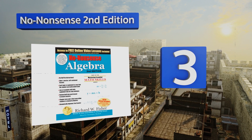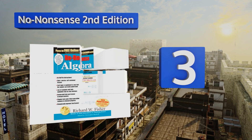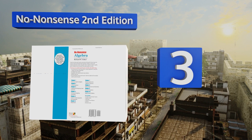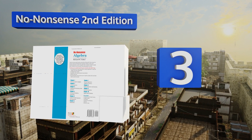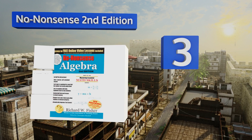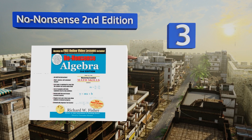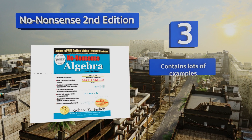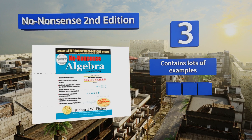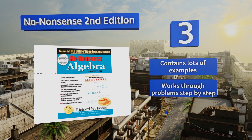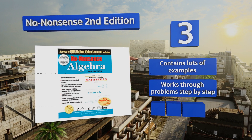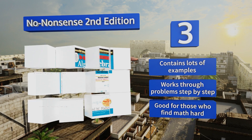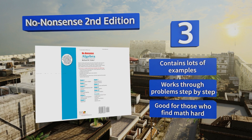Nearing the top of our list at number three, the No-Nonsense Second Edition reviews pre-algebra, expands beyond basic knowledge, and allows students to easily work their way up to more advanced concepts. The lessons are concise and simple with clear explanations to facilitate independent learning. It contains lots of examples and works through problems step by step. It's good for those who find math hard.